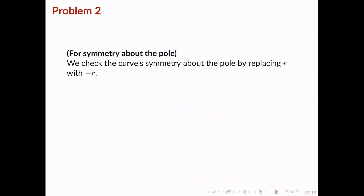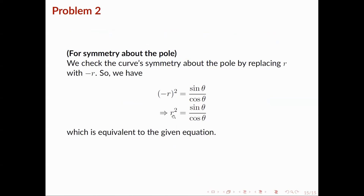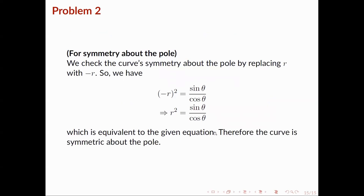For symmetry about the pole, we replace r by -r. We get (-r)² = sin(theta)/cos(theta), which is r² = sin(theta)/cos(theta) = tan(theta). This is equivalent to the original equation. Therefore, we conclude that the curve is symmetric about the pole.